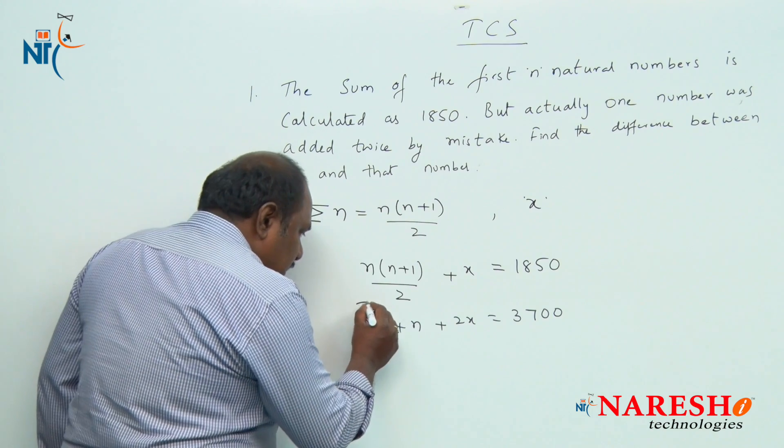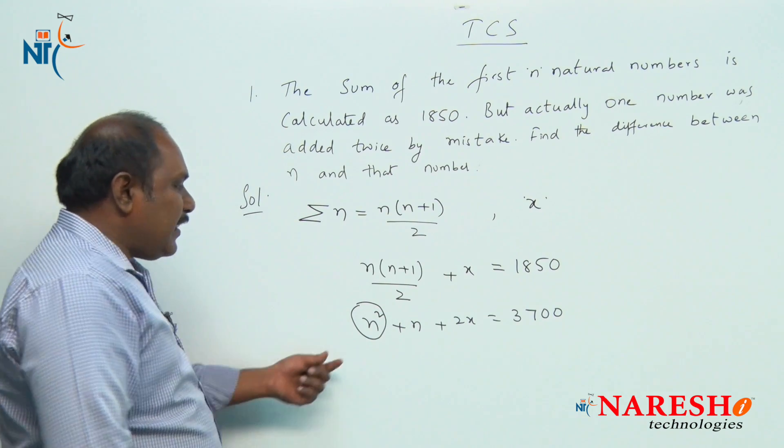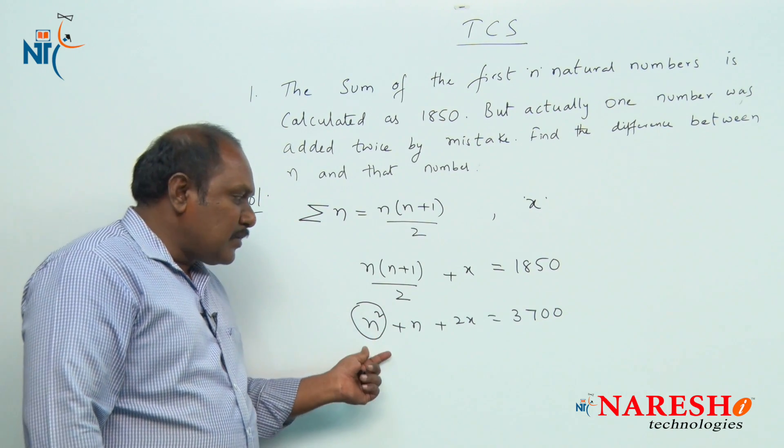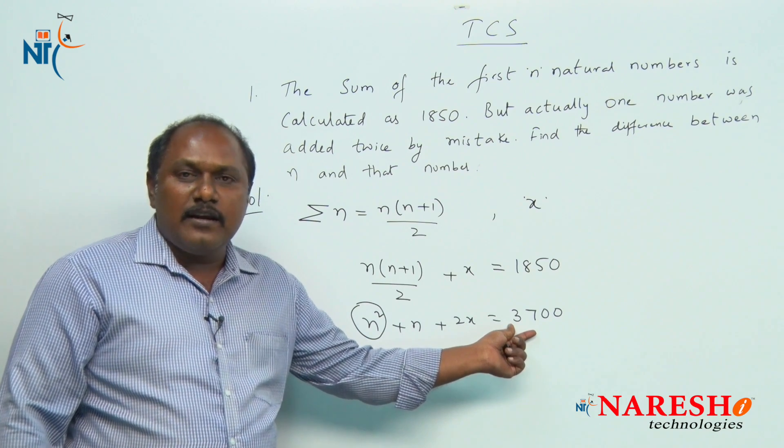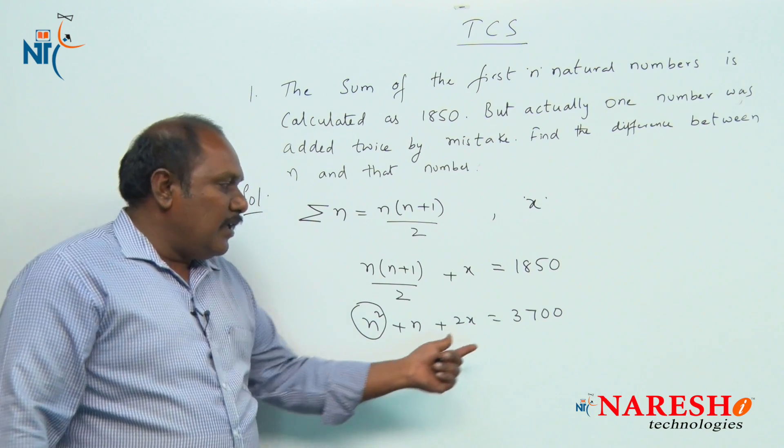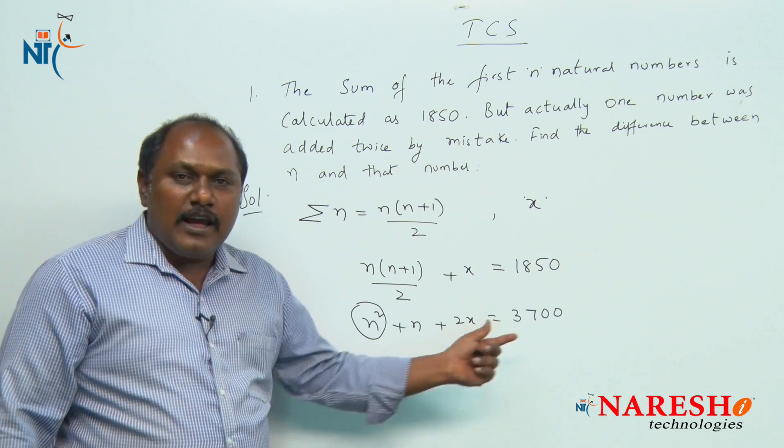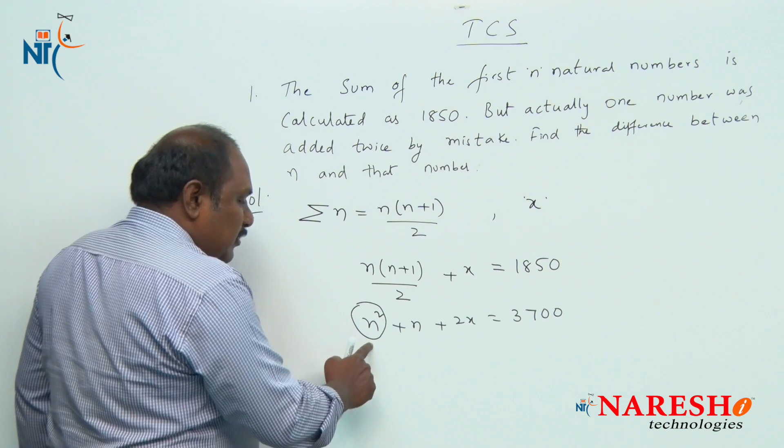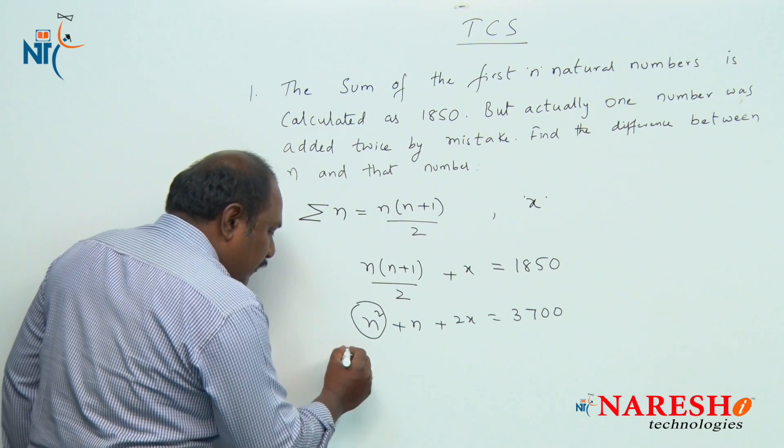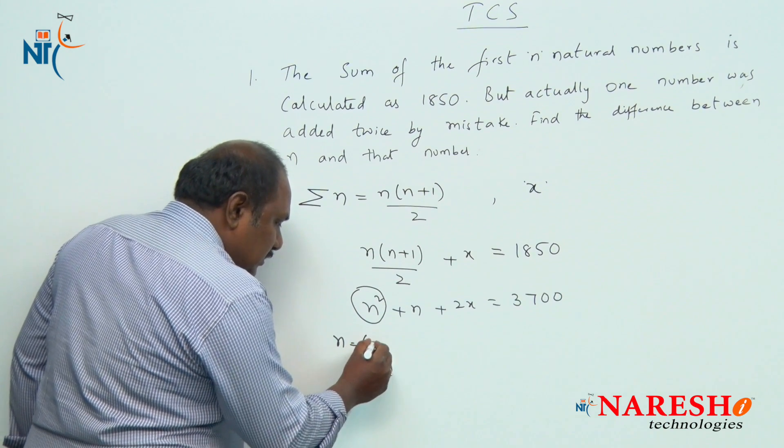Here, n square is a perfect square less than 3700 and nearer to it is 3600. So n square should be 3600, that is the value of n should be 60.